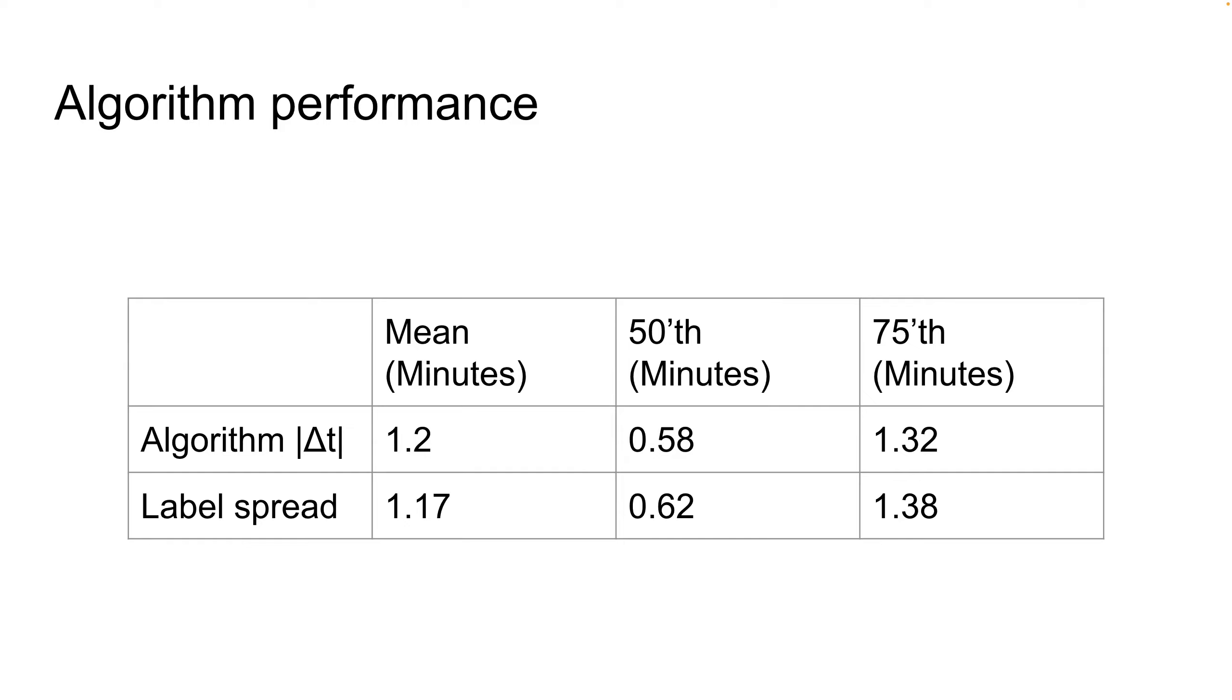The disagreement, the mean disagreement, is 1.17 minutes, which is quite a lot. For the median procedure, it's 0.62 minutes.